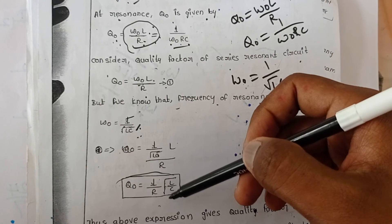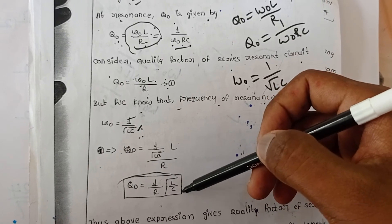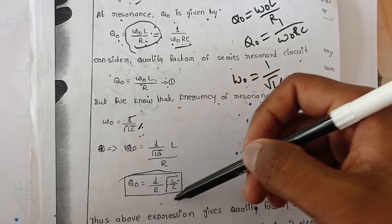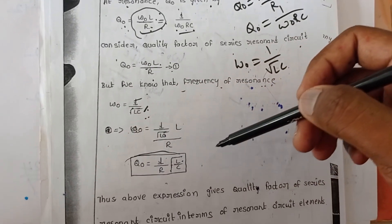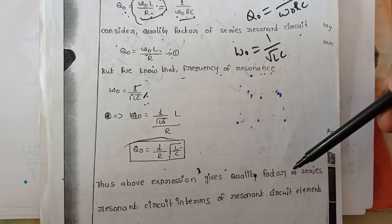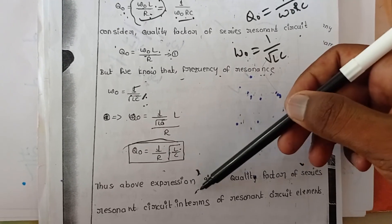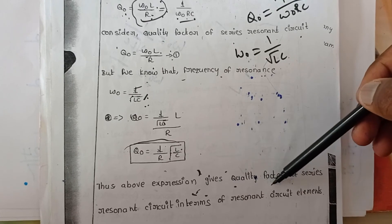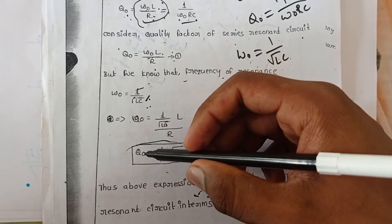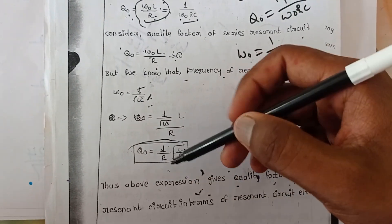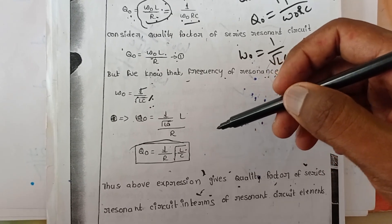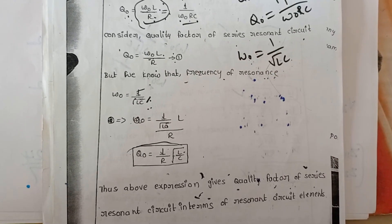Q0 = (1 / R) * sqrt(L / C). This is the quality factor of series RLC circuit. The above expression gives the quality factor of series RLC circuit in terms of RLC circuit elements: Q0 = (1 / R) * sqrt(L / C). Thank you for watching this video.